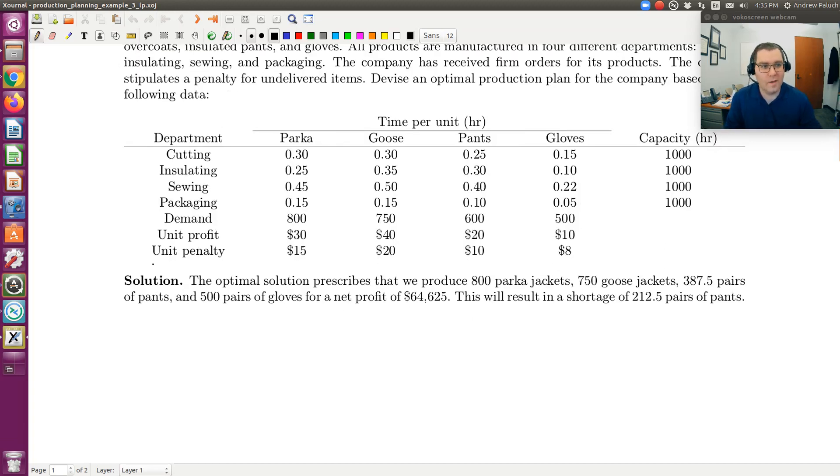So here we have four departments in which our products will be manufactured. We're given the time in hours per unit required for production of a unit of each product in all four departments, where our four products are product one, two, three, and four: parkas, overcoats, pants, and gloves. This row is labeled as the demand. I'll take the demand to be the number of items that have been ordered of each product type, then the unit profit per item delivered of each type, then the unit penalty for each unit undelivered of each type.